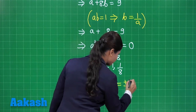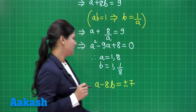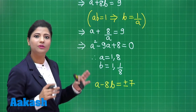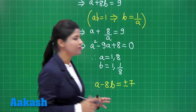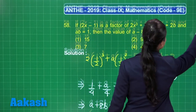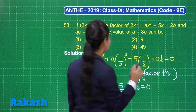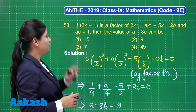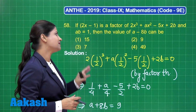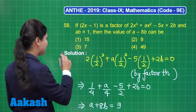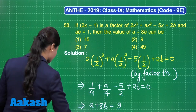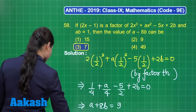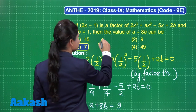So the value of a minus 8b can be plus or minus 7. Going back to the options — 15, 9, 7, or 49 — you can clearly find 7, which is present in option number 3. The correct answer for this question is option 3.